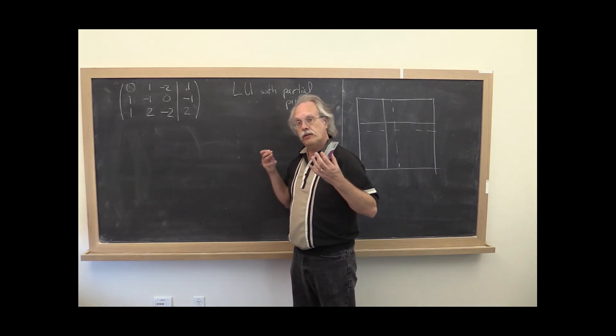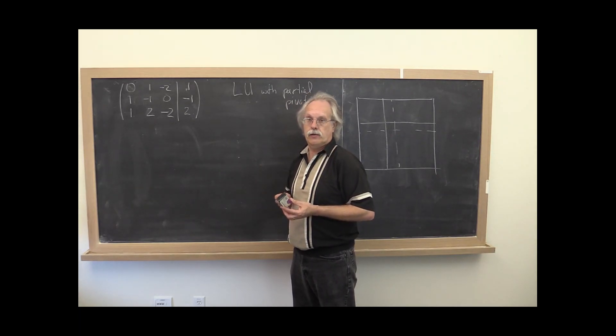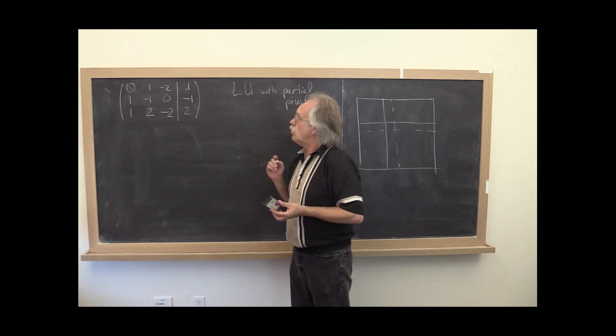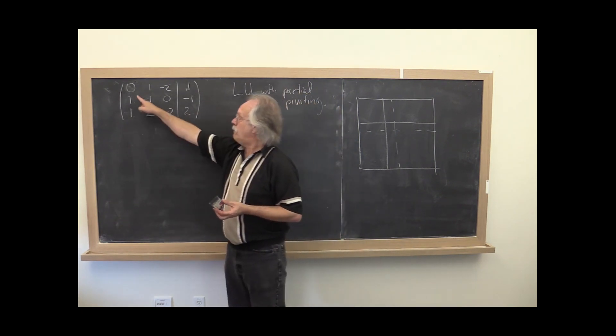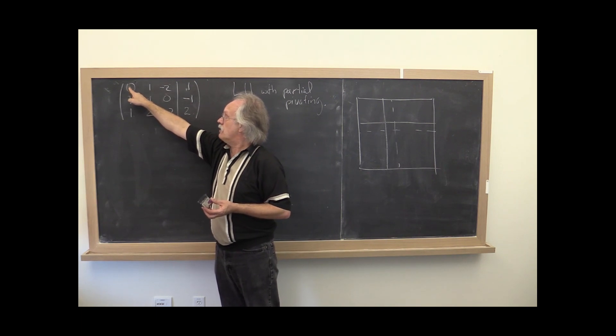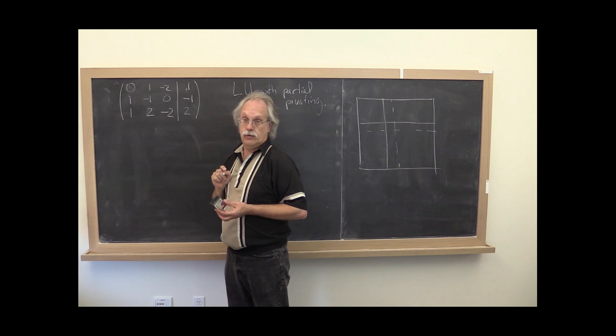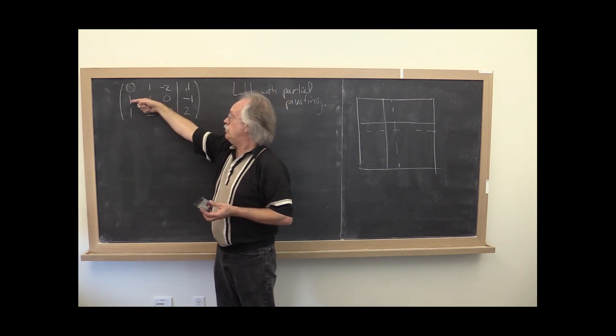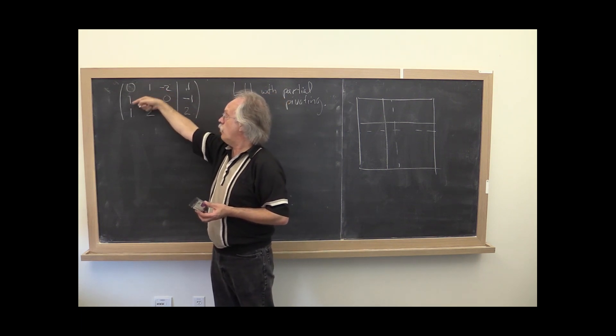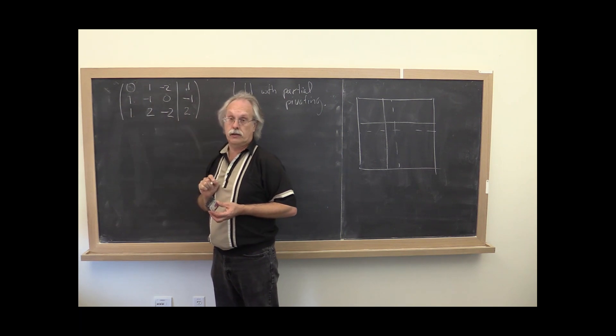When you learned about Gaussian elimination or solving linear systems, you also learned that if you run into a situation where the current diagonal element is zero, then what you should do is swap that row with a row where there is no zero in that column, and then you can proceed.